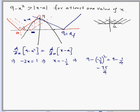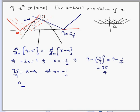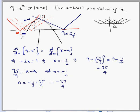Now we find the value of a. Since y = x - a, and at x = -1/2 the y-coordinate is 35/4, we get 35/4 = -1/2 - a, so a = -1/2 - 35/4 = -37/4. This is the initial value a_i.